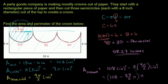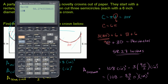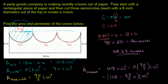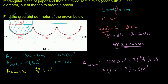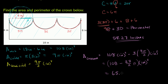You could leave it as 108 minus 27 pi over 2 if you want to express it in terms of pi. But pi is a number and we can use the calculator to evaluate it. We get 108 minus 27 pi divided by 2, which gives us approximately 65.59 square inches. So the area of the crown is equal to 65.59 square inches.